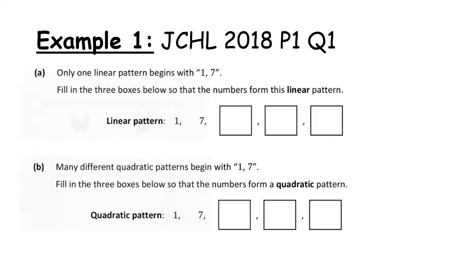Let's look at an example. Only one linear pattern begins with 1 and 7 — fill in the three boxes so the numbers form a linear pattern. A linear or arithmetic pattern has a common first difference. I've added 6, so the term-to-term rule is to add 6 each time. So: 7 plus 6 is 13, 13 plus 6 is 19, 19 plus 6 is 25. That's the only linear pattern because having that 6 added means we must keep adding 6.